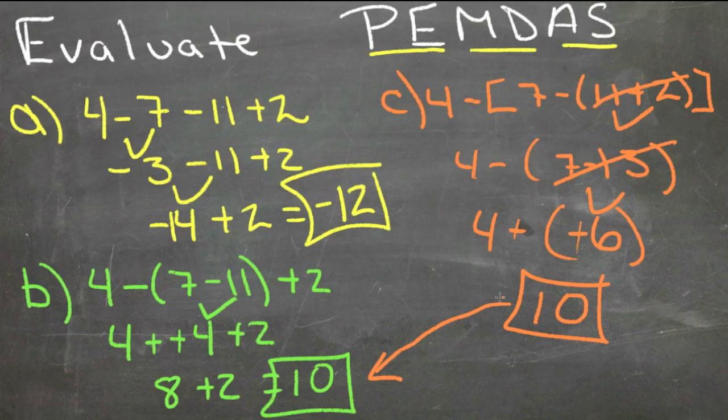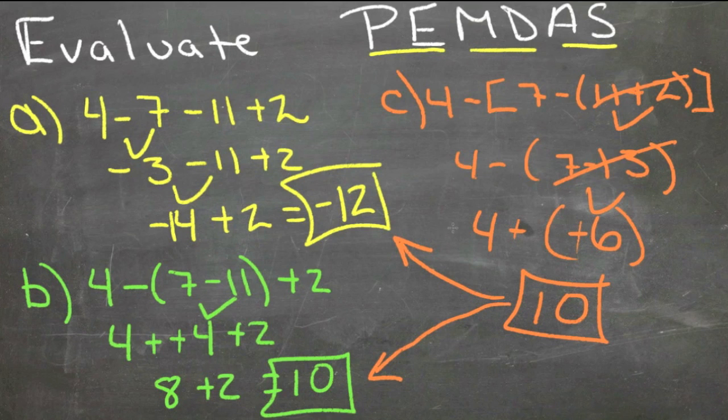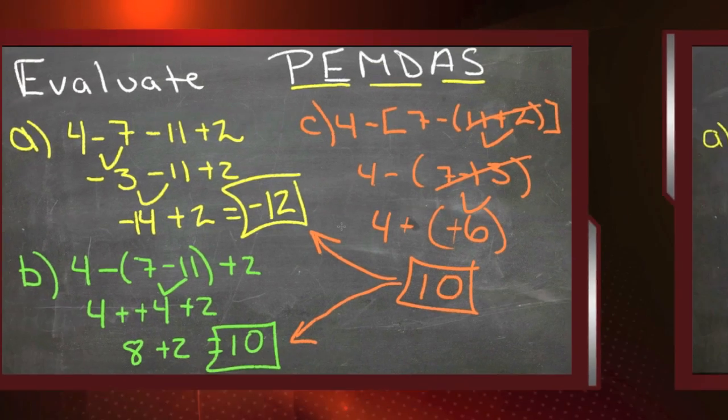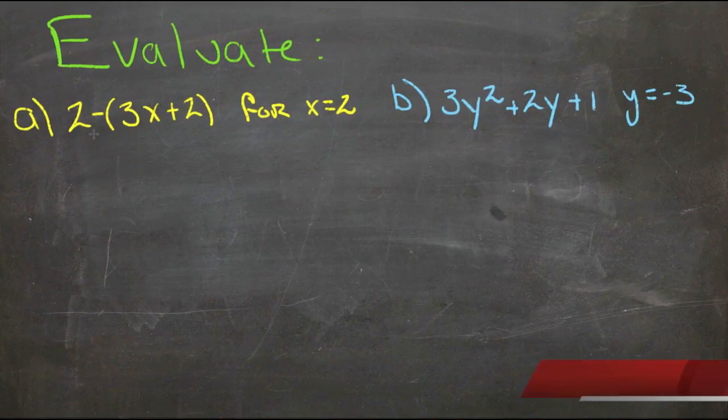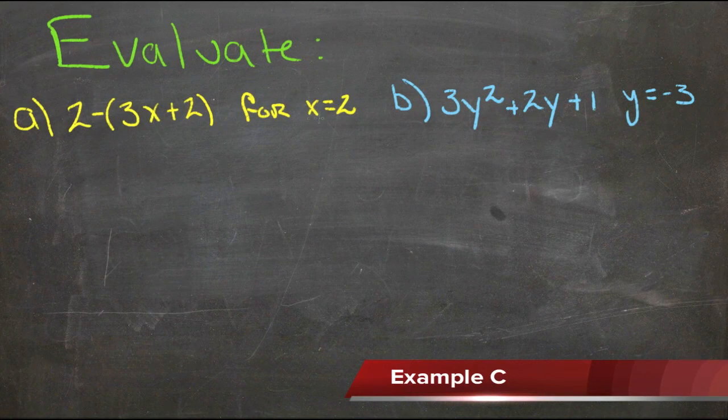Negative 12 to 10. So we want to keep track of the order of operations to make sure that we don't end up getting the wrong answer on something just because we did something out of order. This time we're actually going to evaluate the expressions given a value for each variable.